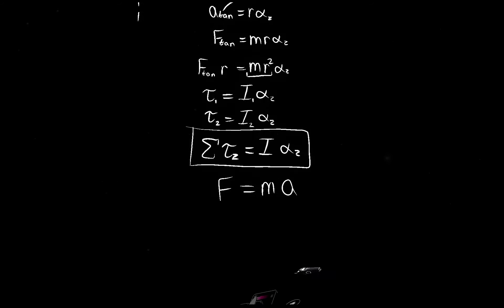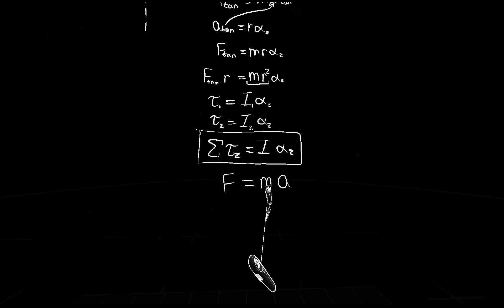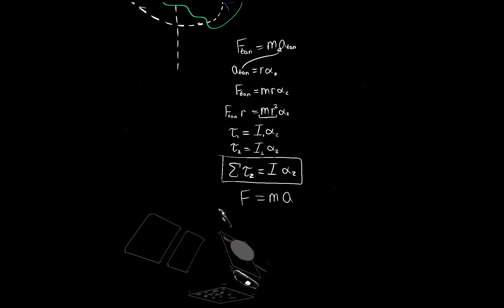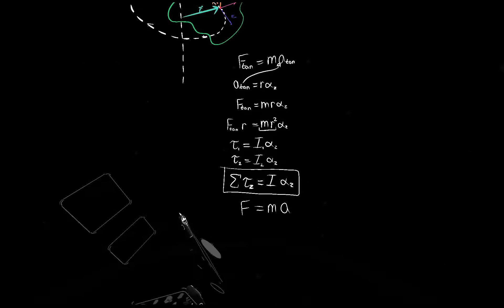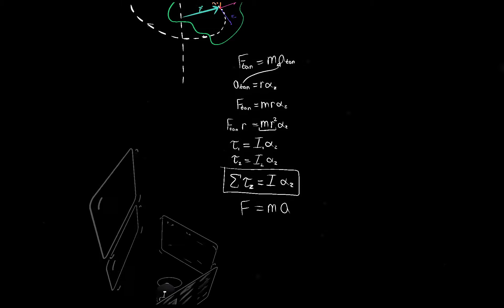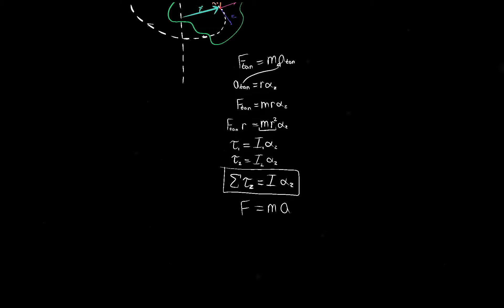And in words, it says that the net torque on a rigid body equals the body's moment of inertia about the rotation axis times its angular acceleration. So we can't use this to determine the motion of fluids or deformative objects, but any rigid bodies, this applies to.